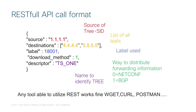This is how a RESTful API call looks like. It provides the source of the tree, a set of destinations for the whole tree, and an MPLS label value which will be used to build forwarding entries. Then it instructs the controller about the method used to program entries into routers. There are many different applications supporting the RESTful API.